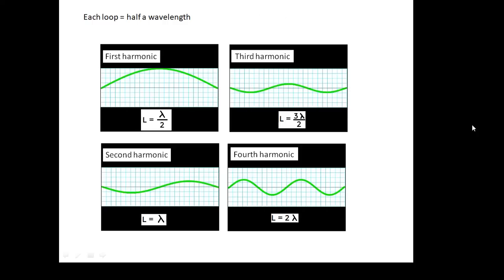Each loop is half a wavelength. For the first harmonic it's one loop, so the length of the string L equals λ/2. For the second harmonic we have two loops, so the length equals one full wavelength. For the third harmonic we have three loops, so the length is one and a half wavelengths. For the fourth harmonic we have four loops, so the length of the string is two wavelengths.